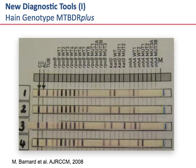Line probe assays have been introduced widely and allow one to look at mutations leading to rifampin resistance in the rpoB gene, or isoniazid resistance via katG or inhA mutations. While it is possible to work directly from smear positive cases, usually there is intermediate culture. The technology is complicated and therefore not routinely available, particularly at point of care.